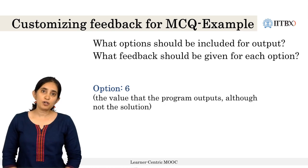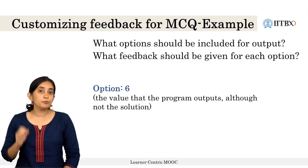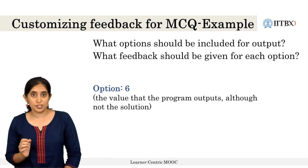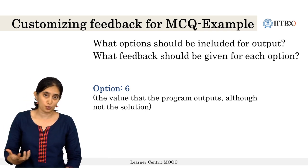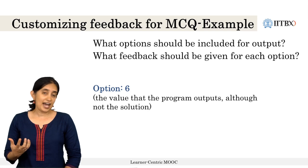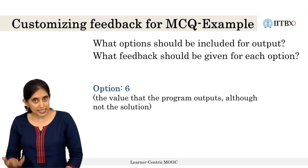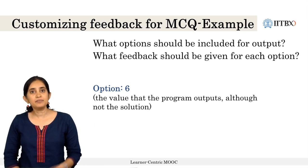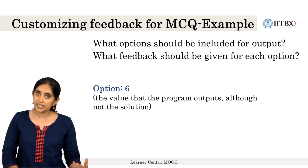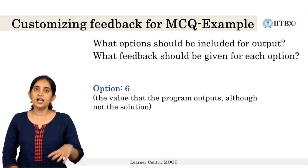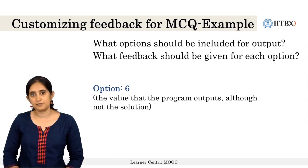Another option is 6, which is in fact what the program outputs even though it is not the solution to the question. Some learners may have chosen 6, and the feedback can tell them that yes, this is what the program outputs. However, this is not the right answer, and the feedback tries to help them see where the discrepancy is.